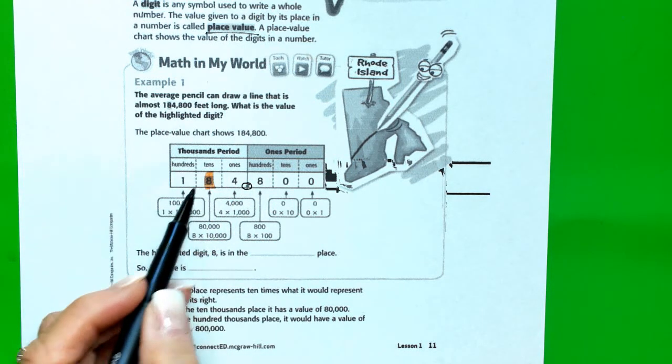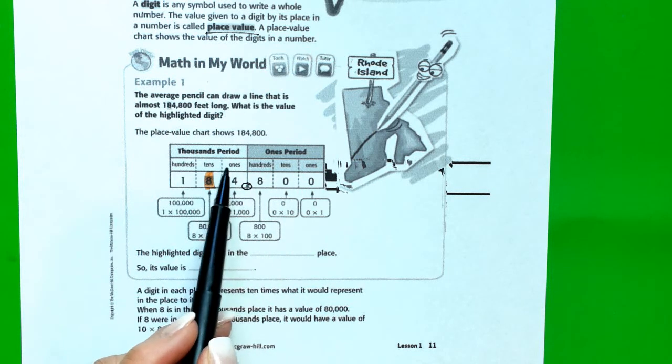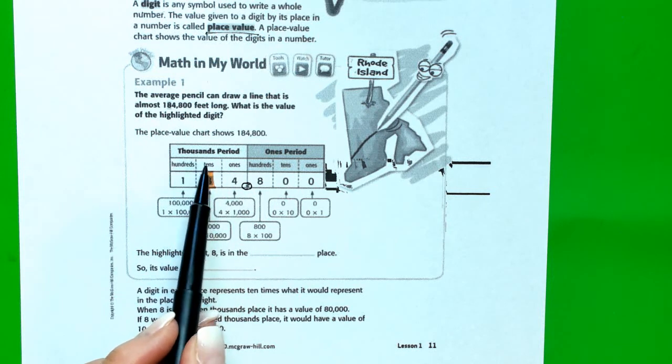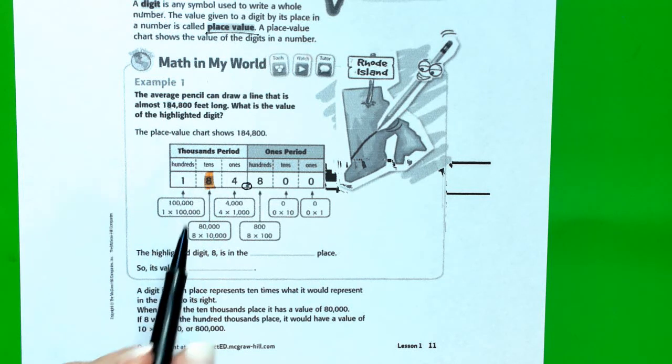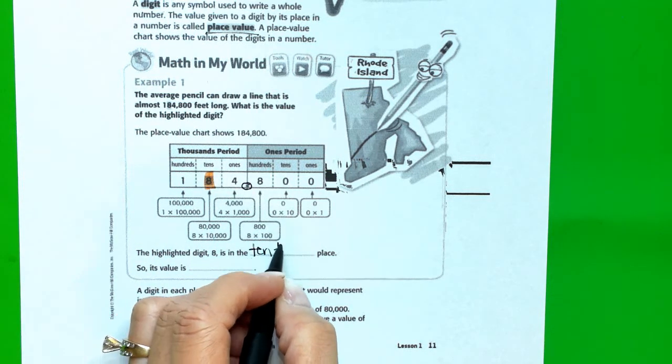The highlighted digit 8 is in the ones, tens, hundreds. Now we're in the thousands period: ones, tens. So it's in the ten thousands period. Do we see that? So let's write ten thousands.